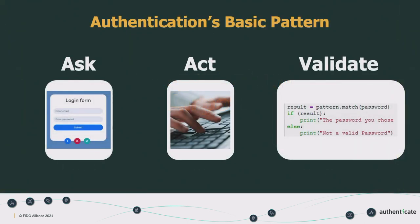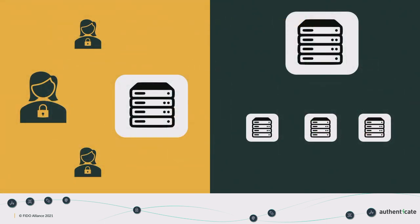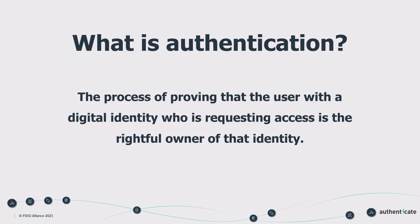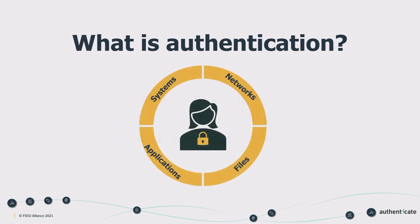These three same steps still apply: ask, act, and validate. And we authenticate digitally far more frequently than we go through TSA — 50, 100, 200 times a day. You authenticate when you put your passcode into your phone, when you type a password to access a site or service, when you use Windows Hello to sign into your desktop. Authentication is the process of proving that the user with a digital identity requesting access is the rightful owner of that identity, allowing us to control access to systems, applications, files, networks, and more.